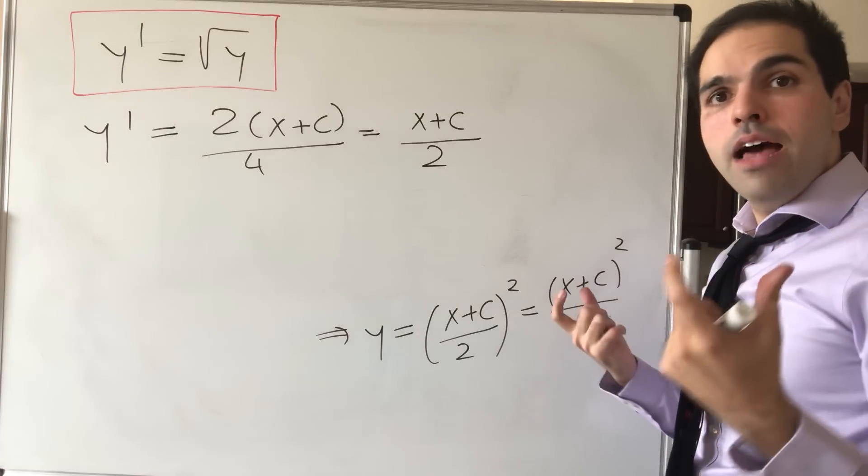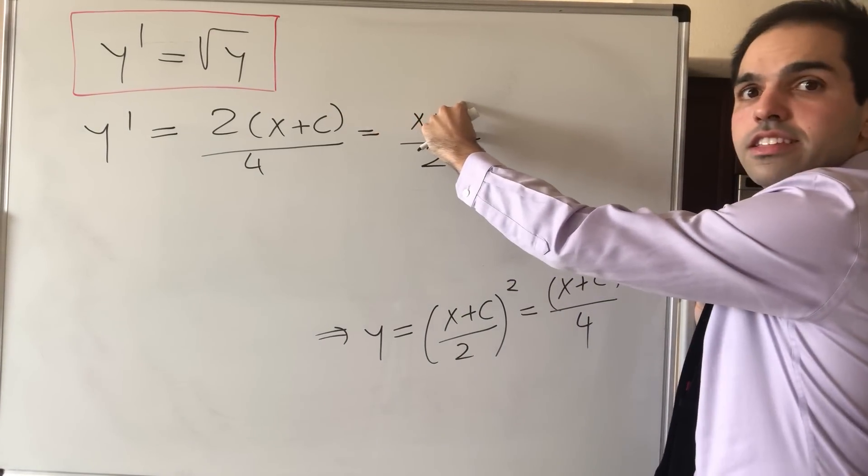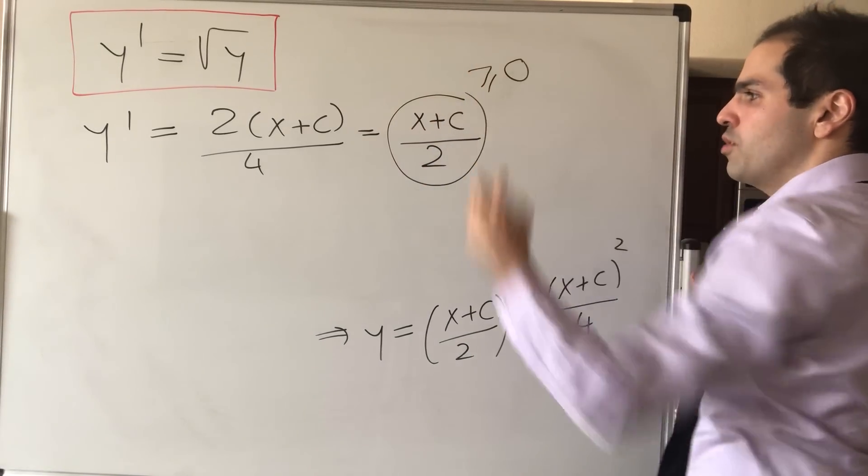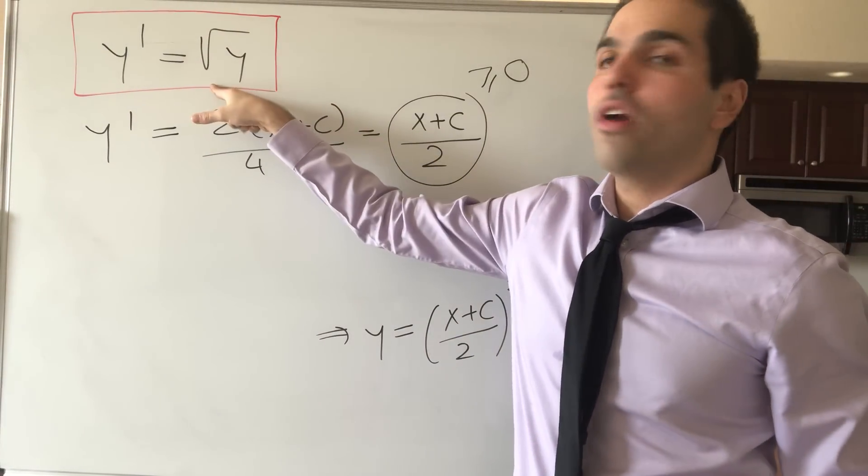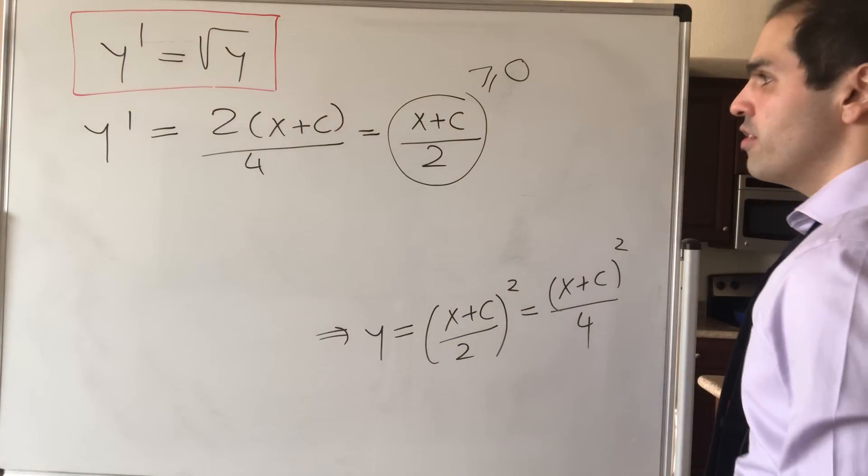On the other hand, remember, x was greater or equal to 0. So if this constant is greater or equal to 0, we may assume this whole thing is greater or equal to 0. Which, by the way, makes sense, because we want y prime to be this square root. So y prime should be greater or equal to 0.